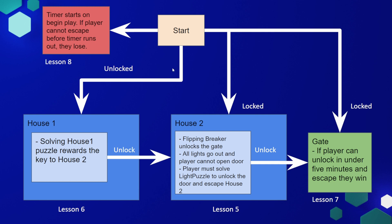Now in our level, we have two houses and we have a gate. I've blocked each of these out in this diagram as well. The ultimate goal is to unlock the gate in under five minutes so the player can escape. And this is the win condition. But the gate is locked at the beginning.